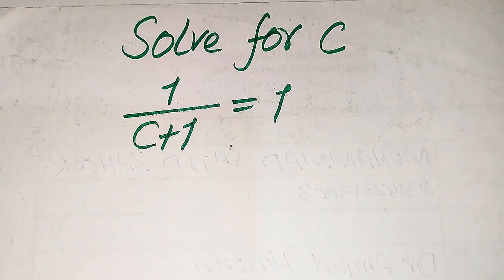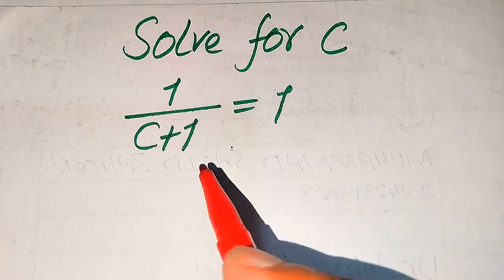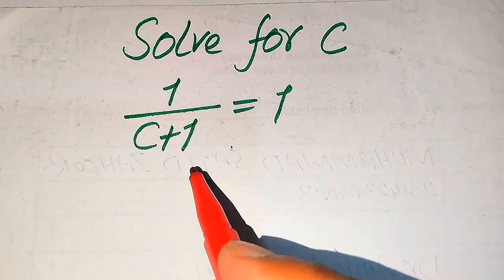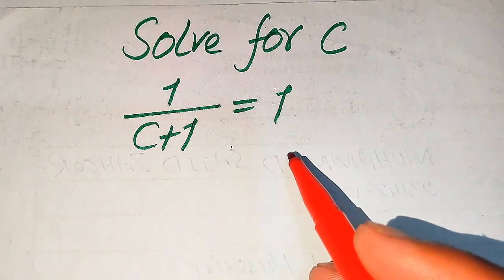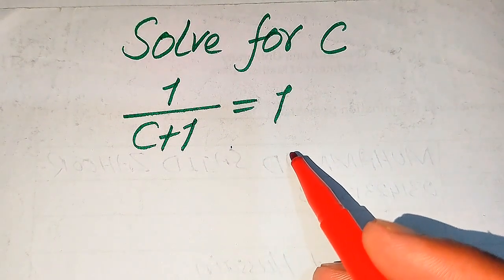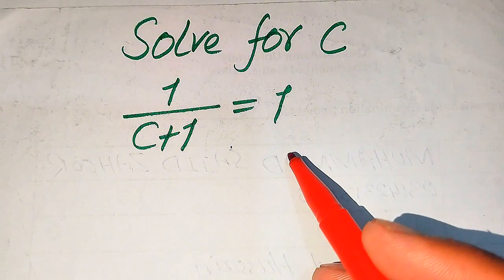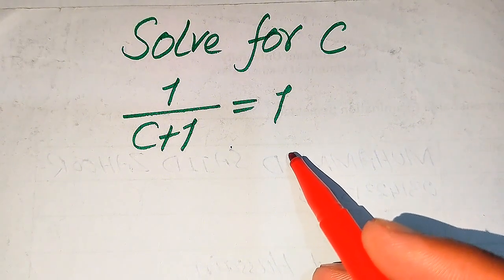Hello everyone. How to solve this problem for the values of c, if we have 1 divided by c plus 1 equals to 1, and we solve this problem for the values of c.